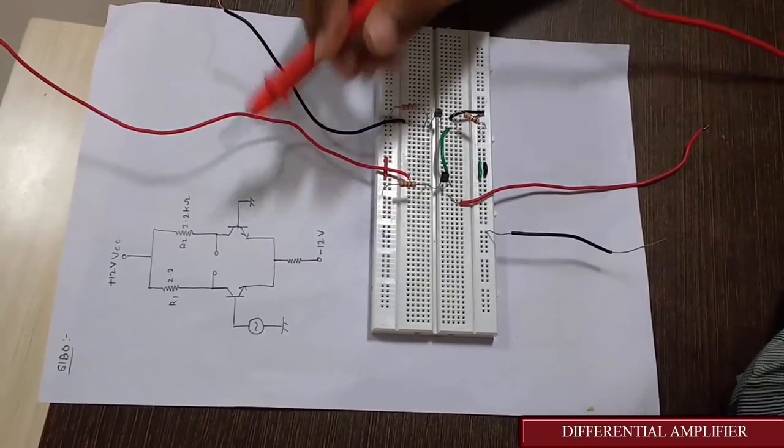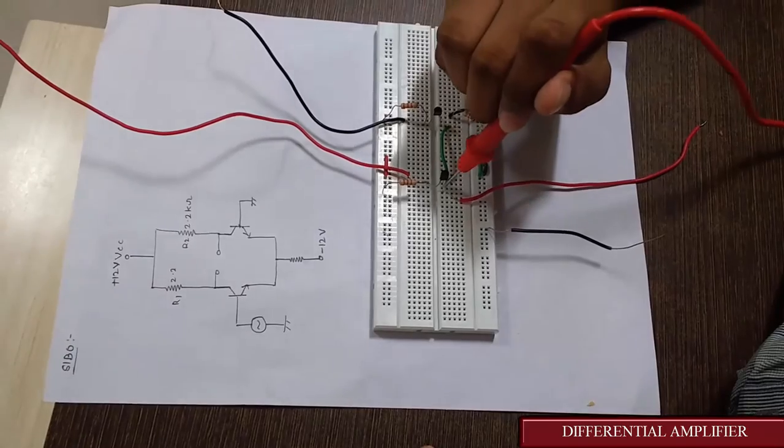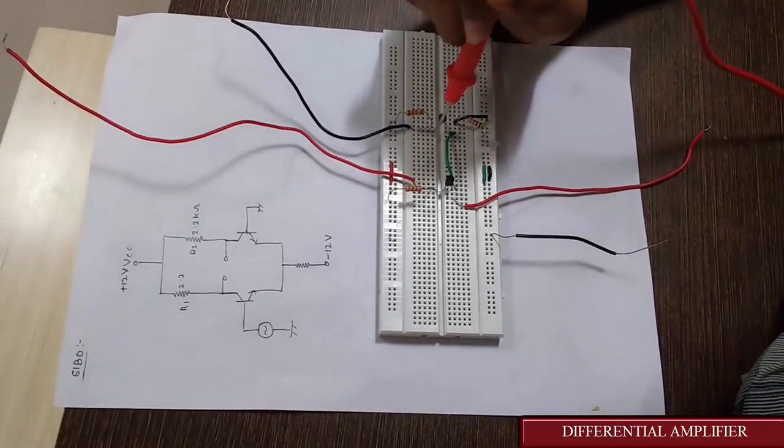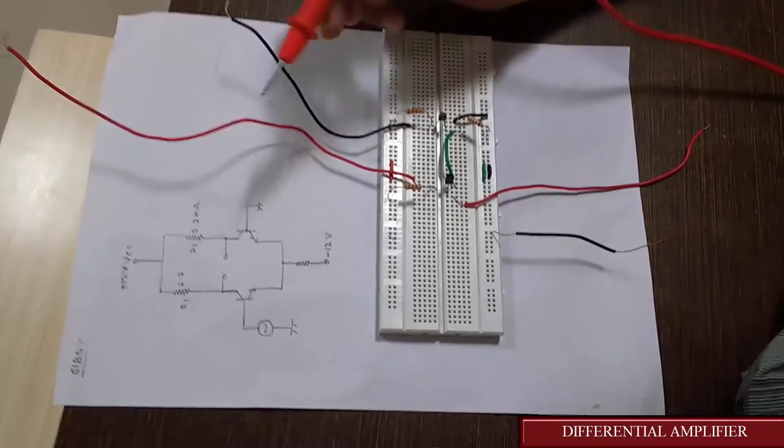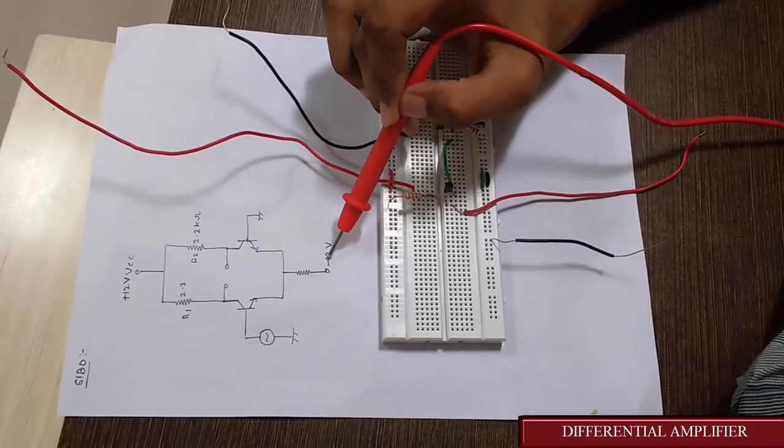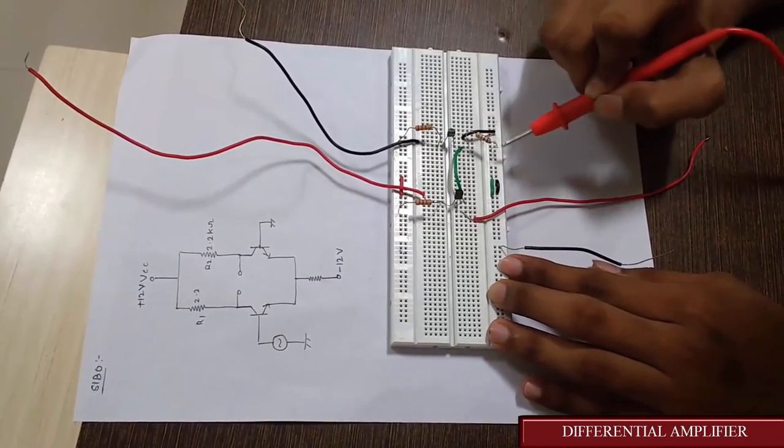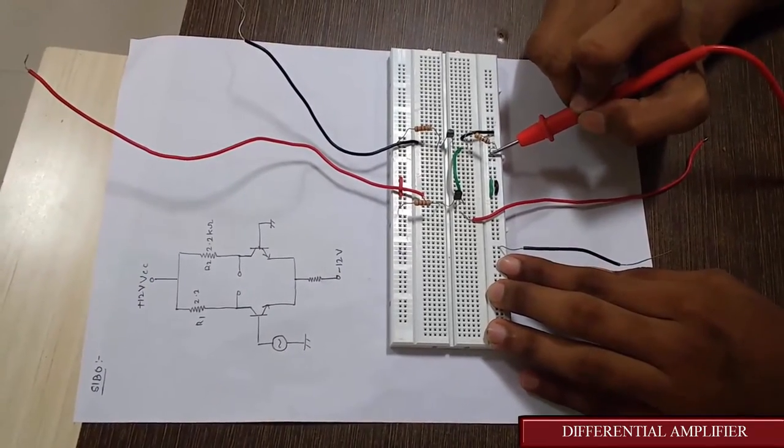In the circuit diagram we can see that two transistors are used with E, B, C terminals. The transistors are placed on the breadboard. The emitters of the two transistors are connected to a resistor which is given minus 12 volts. This green wire indicates minus 12 volts that will be supplied from the power supply.